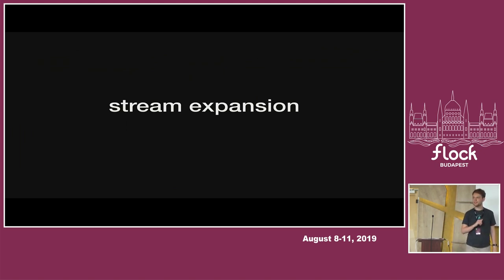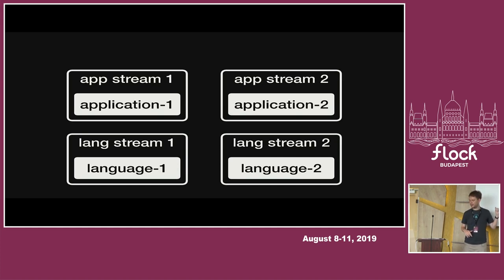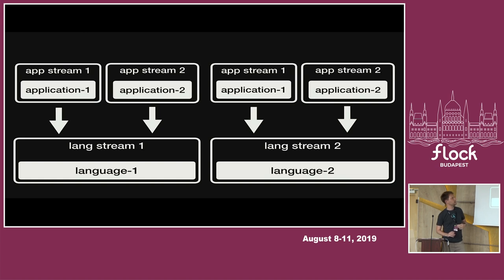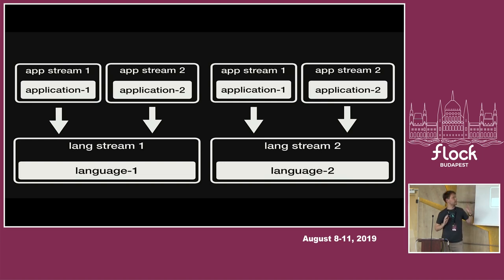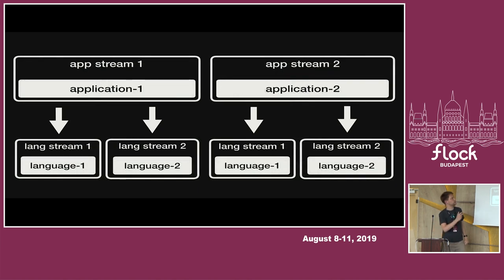Who heard about stream expansion? Okay, three people. Stream expansion is how we deal with multiple versions of dependencies. Imagine I have two language streams and two applications, and both applications can work with both languages. I can say I just want to build this and it somehow expands — I end up with four binaries of the app, two for each language. So I can deploy both combinations on my system. This is how I can deal with switching languages but keeping the version of the application. It switches the binary but the application version stays the same. You can also look at it from the other side: two versions of applications that are compatible with both languages. That's basically stream expansion.